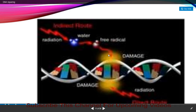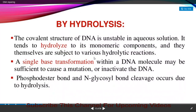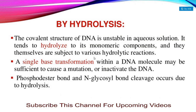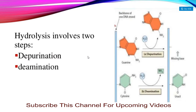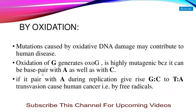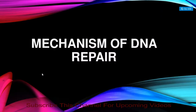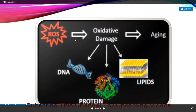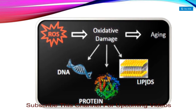Ultraviolet radiation causes damage to DNA. Hydrolytic damage involves two steps: depurination and deamination, as already studied in the mechanism of induced mutations. Oxidative damage causes aging and affects DNA, proteins, and lipids. These are the basic types of DNA damage, leading us into the DNA repair mechanisms.